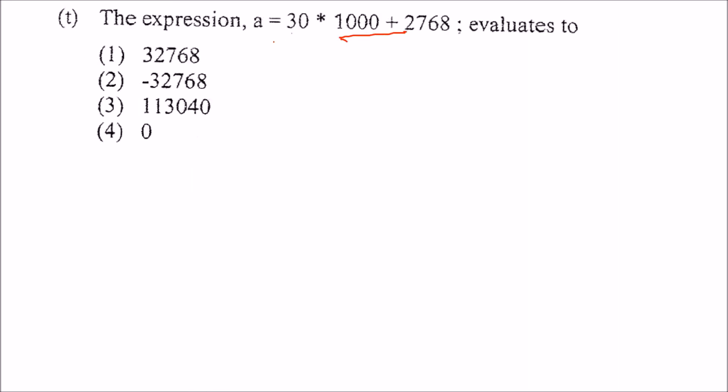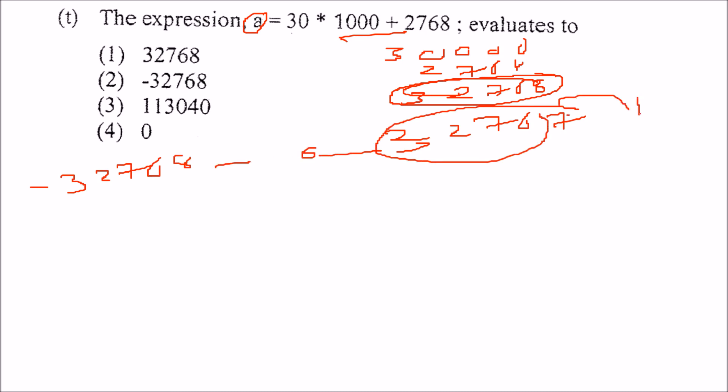The expression this evaluates to what? See, if you try to see what is coming. And if you assume that the integer, this a is an integer and it is of 2 byte. Then, this 3 0 0, this will be 3 0 0 0 0. And this will be 2 7 6 8. So, 3 2 7 6 8. Now, this goes beyond the limit of 2 by. 3 2 7 6 7. 3 2 7 6 7 is our higher limit. So, what this is going to give you? This will take you to the opposite side of the number line. See, this is minus 3 2 7 6 8 0. This is the number line. So, because we have just crossed this limit and we have gone here. This will take us here. So, the answer will be this one. Minus 3 2 7 6 8.